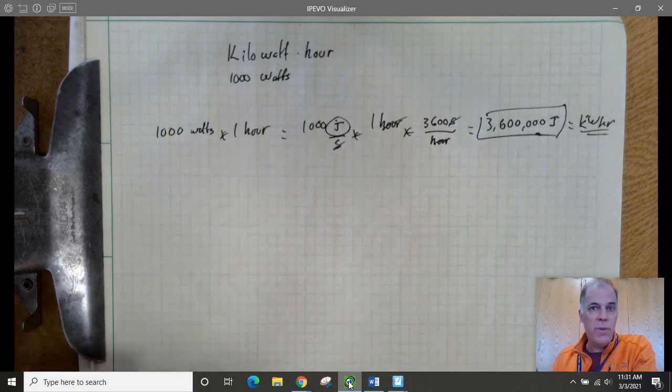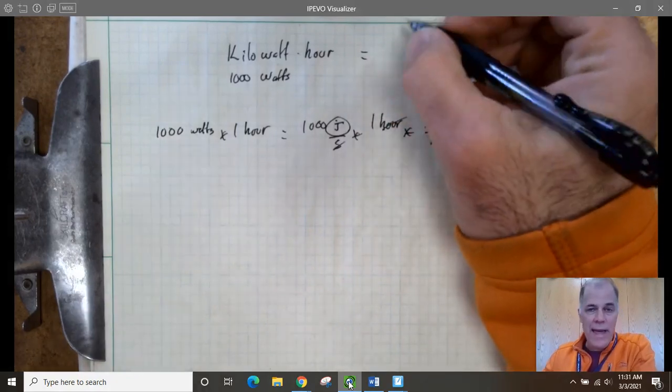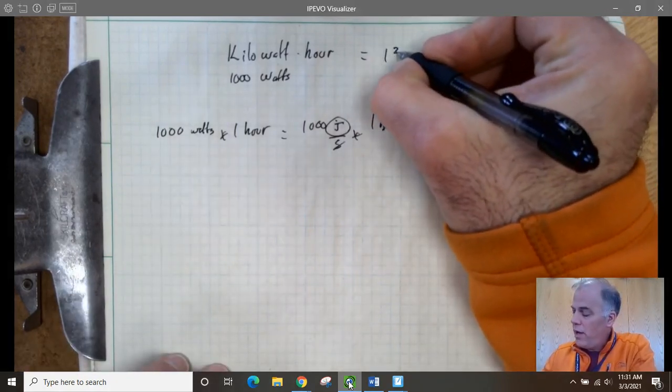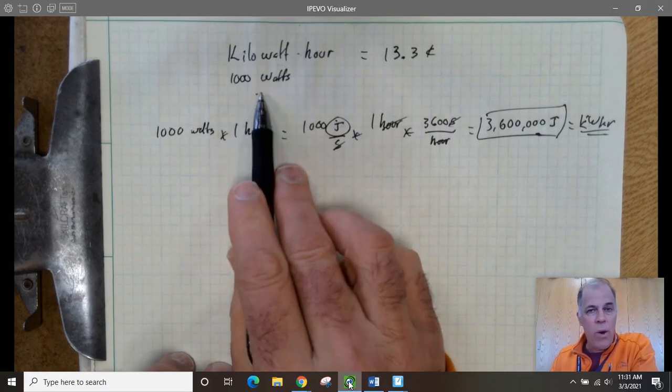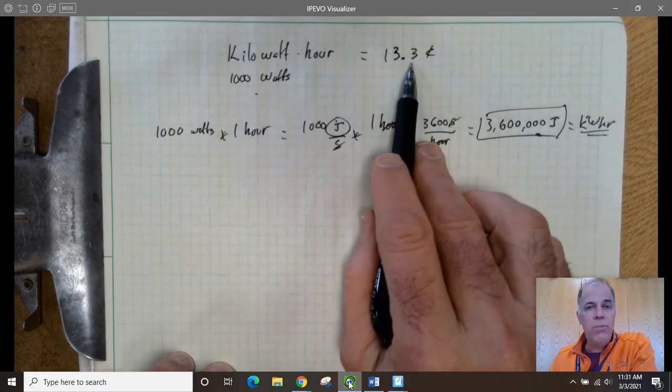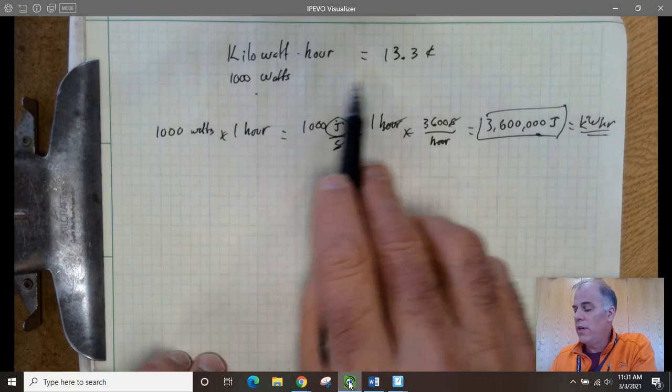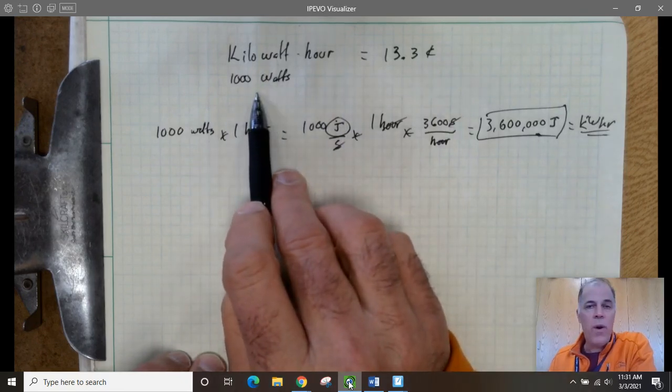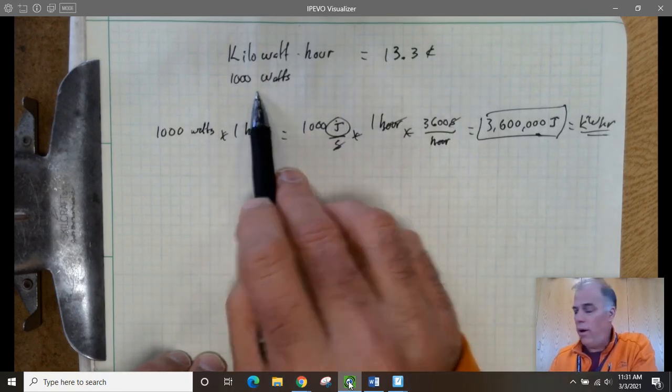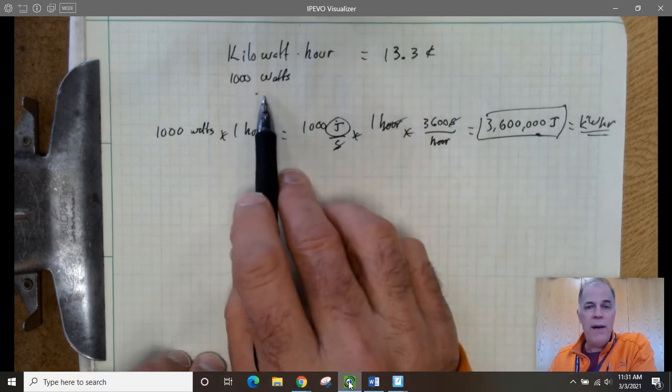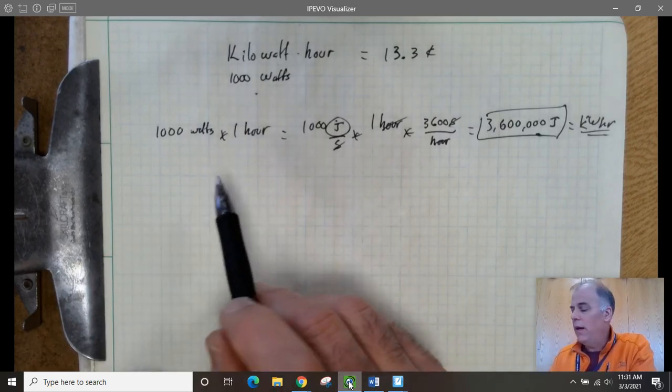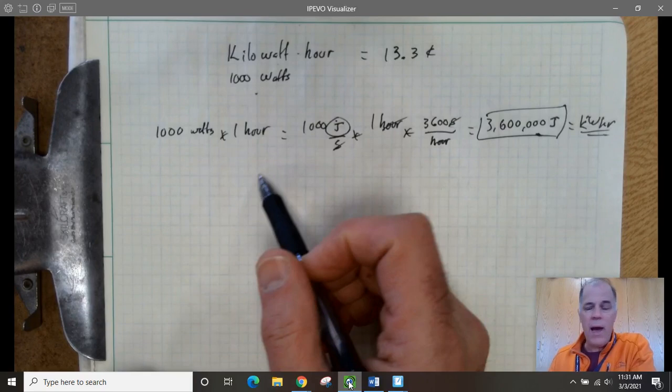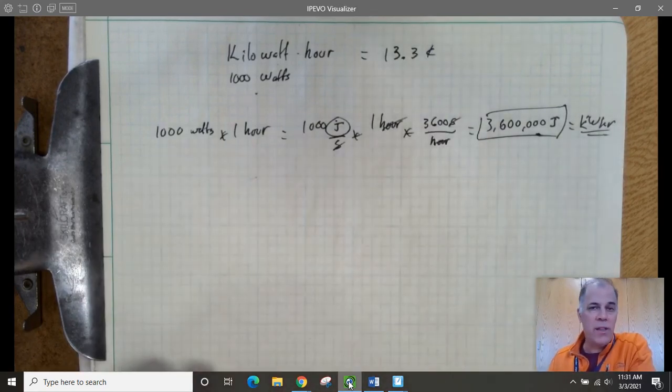Now, I just looked it up on the internet, so it must be true. But a kilowatt hour right now, on average in the United States, costs 13.3 cents. So if you run your 1,000 watt hair dryer for an hour, the electricity that you use costs 13.3 cents on average in the U.S. If you run your 1,000 watt microwave oven for an hour, 13.3 cents. If you have 10 100-watt light bulbs lighting up your house, and you run all those 100-watt light bulbs, 10 of them for an hour, 13.3 cents, that's how much the electricity costs.